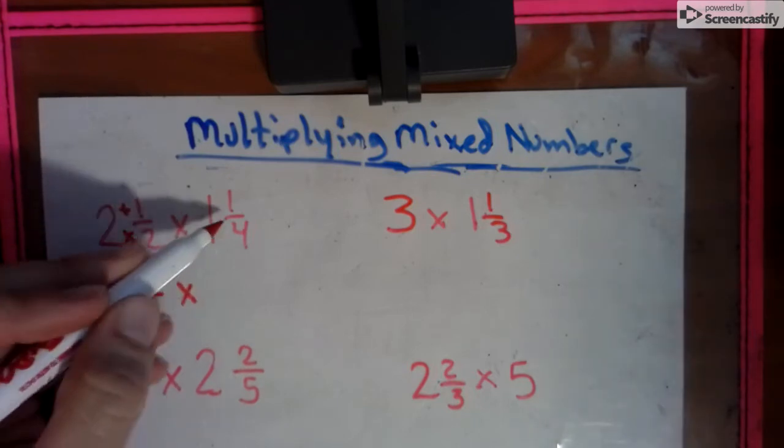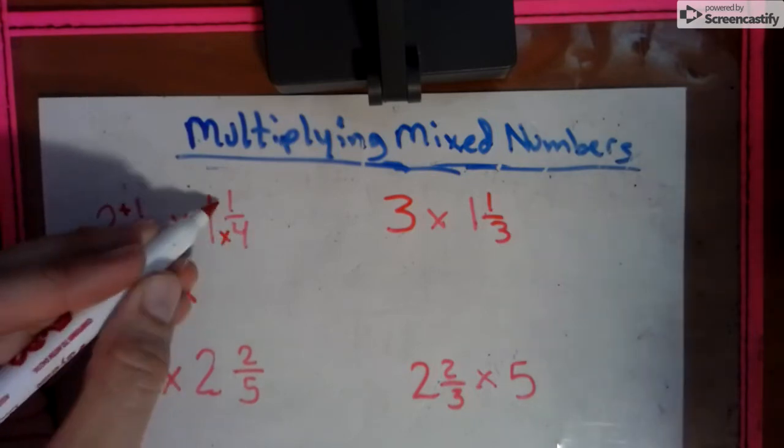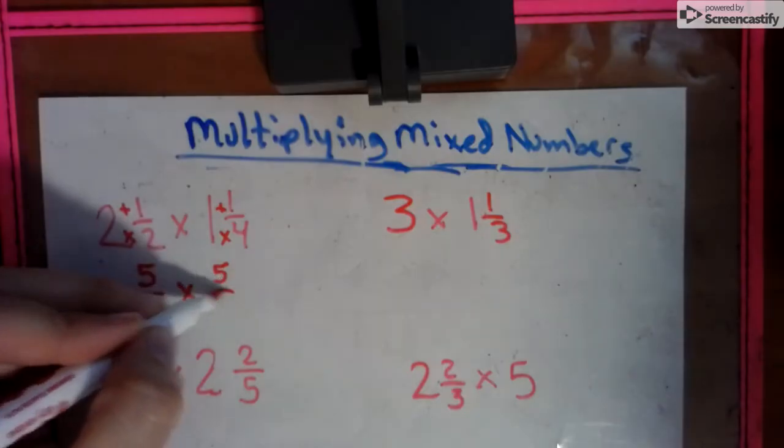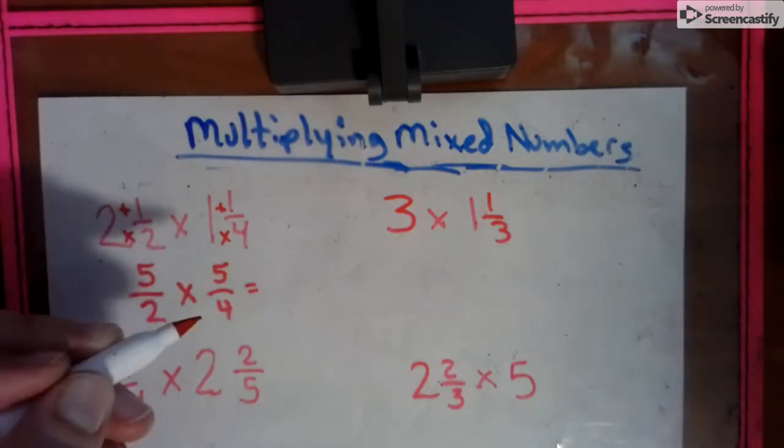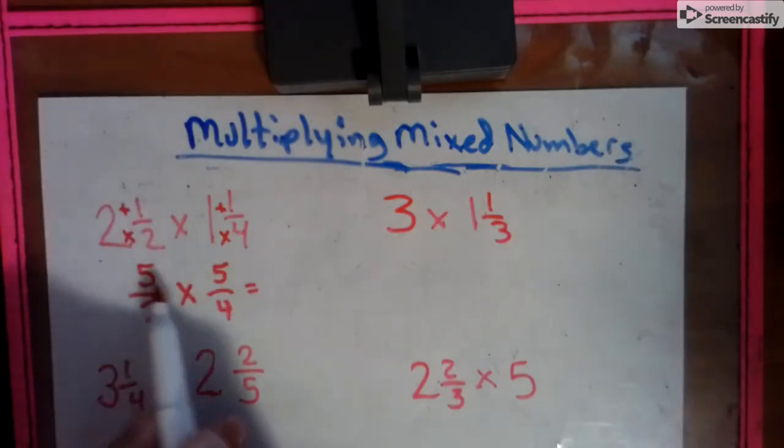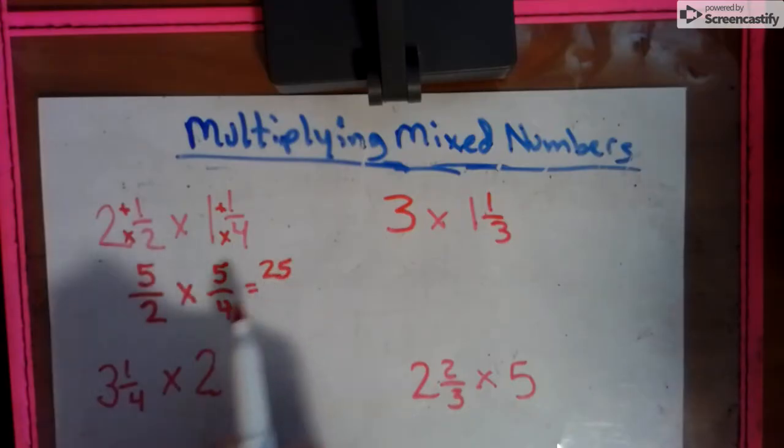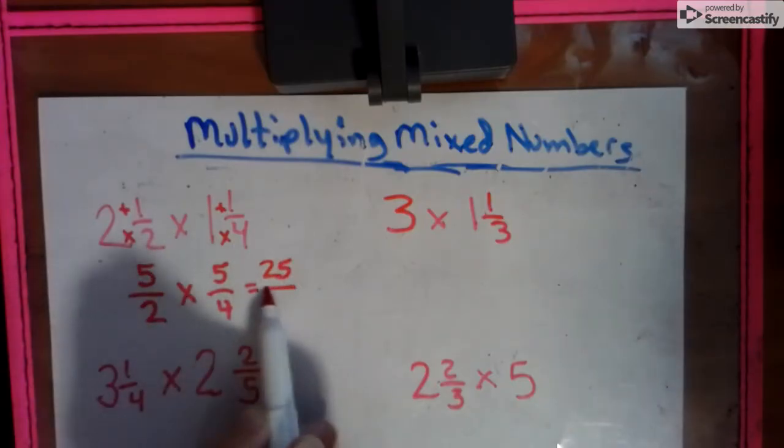We do the same thing right here. We have 4 times 1 plus 1, so that's 5 over 4. And then we're back to what we just did yesterday, which is 5 times 5 is 25, straight across multiplication. 2 times 4 is 8.